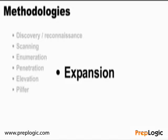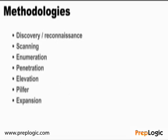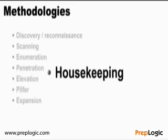Expansion is when we start to grow beyond the boundary of just a single system and affect other parts of the network — it could be directory services or other network devices. Finally, we have housekeeping, where we cover our tracks and put in malware or backdoor accounts that we can use to regain entrance to the network later at our choosing. These phases are interchangeable, as I mentioned.